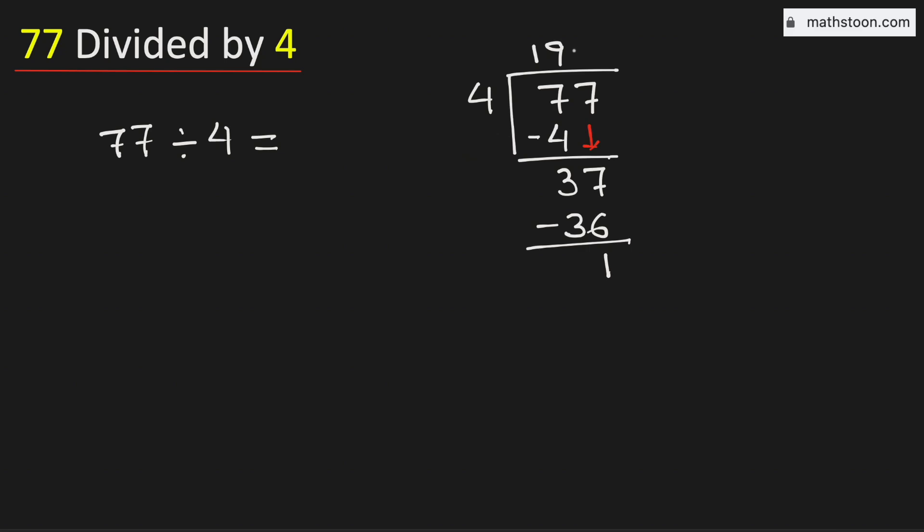That is why we will put a decimal here so that we can borrow 1 zero. Now 4 times 2 is 8. Subtract, we get 2.